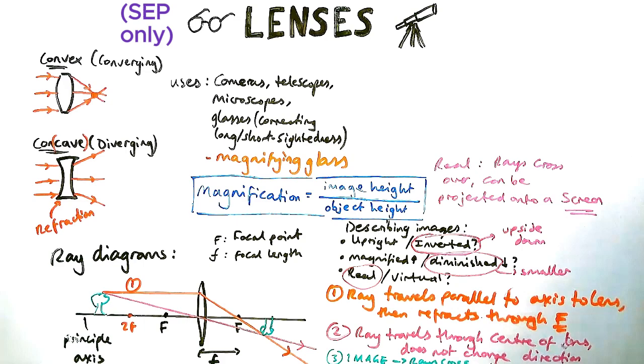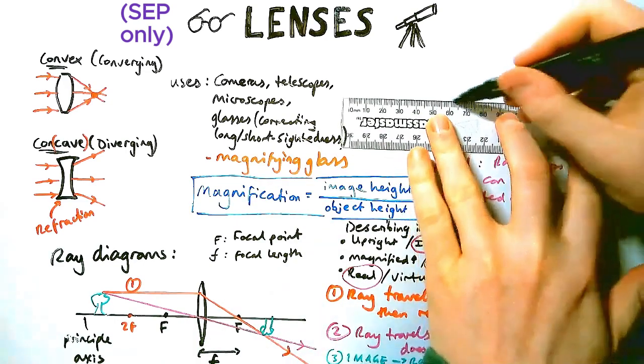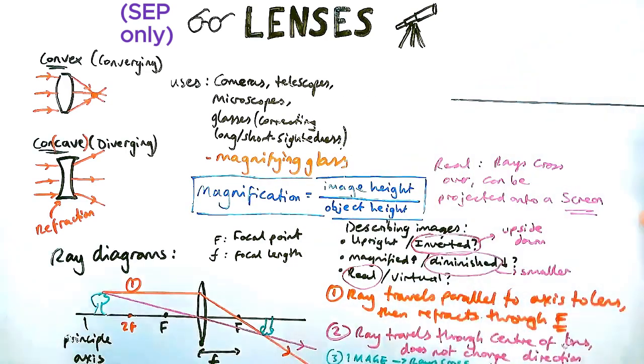A virtual image means, obviously, it can't be projected onto a screen, and it's not formed when rays cross over. So we'll come on to an example of that next.